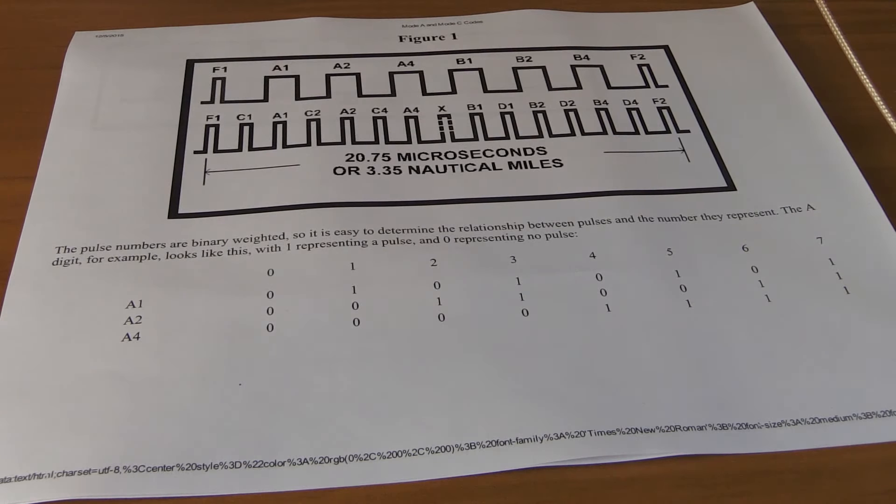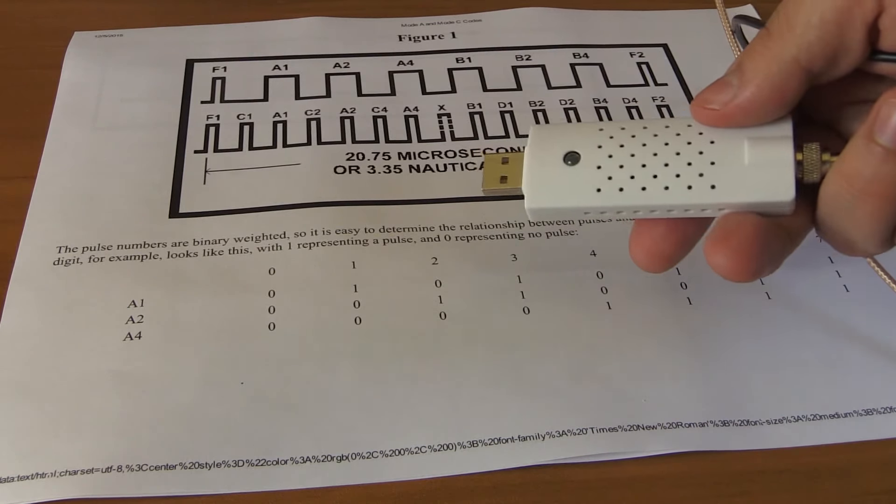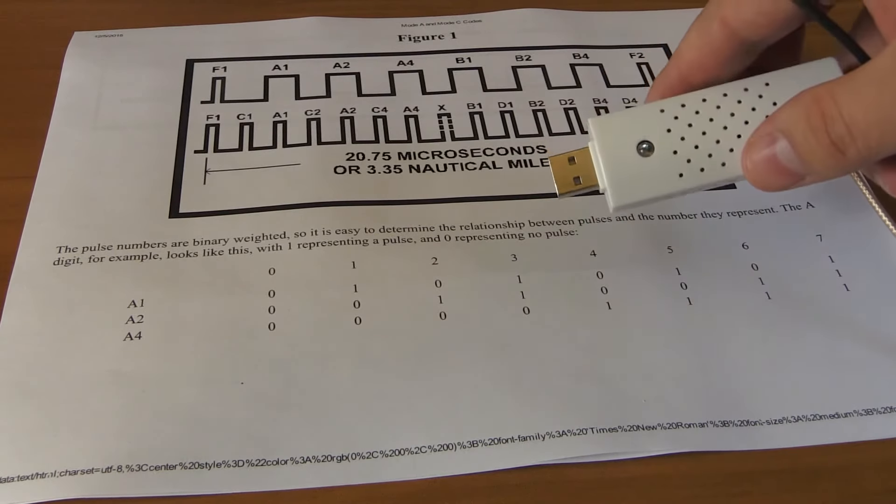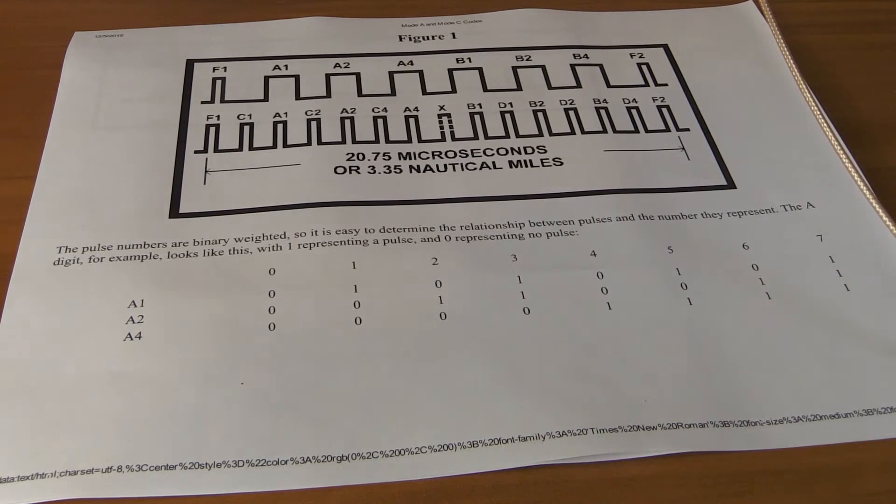But anyway, there's a lot of enthusiasts which use software like RTL 1090, for instance, and these software dongles such as this to receive these airplane packages, the ADS-B out messages, and then map them on a radar screen. And I thought, why don't we generate a signal for transponder code 777 and see if RTL 1090 correctly decodes that as a mode C transponder signal.